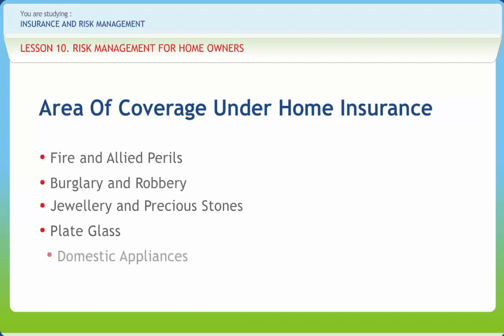Next is domestic appliances. The breakdown of any domestic appliance or equipment can hinder the running of your day-to-day life. Air conditioners and refrigerators can be covered against accidental electrical or mechanical breakdown, and the list and values of items to be covered should be indicated. Next are electronic equipment: computers, TVs, and VCRs can be insured against all risk of breakdown.